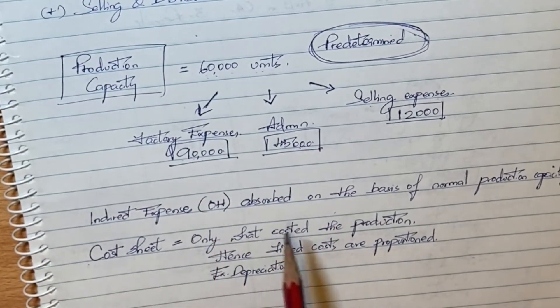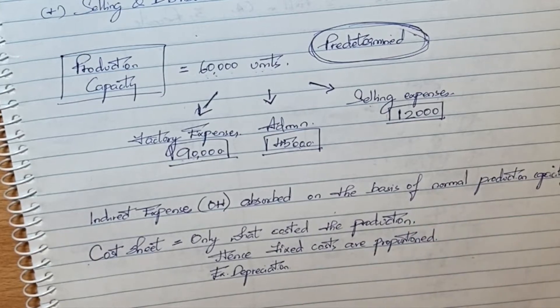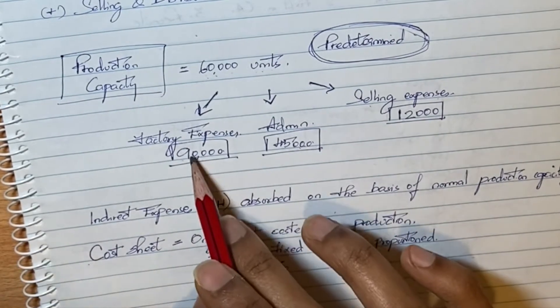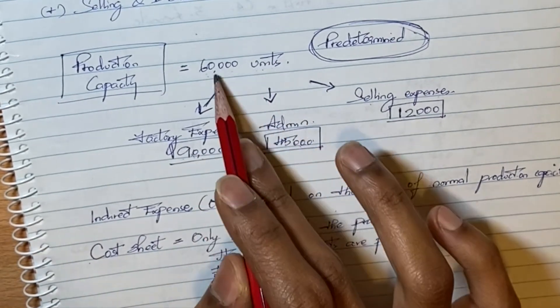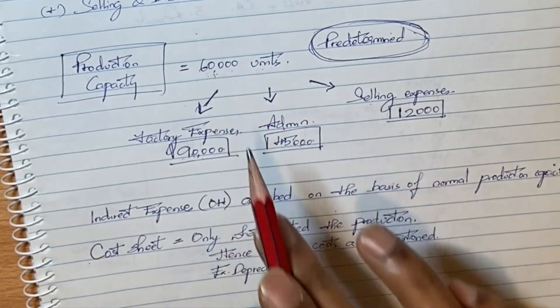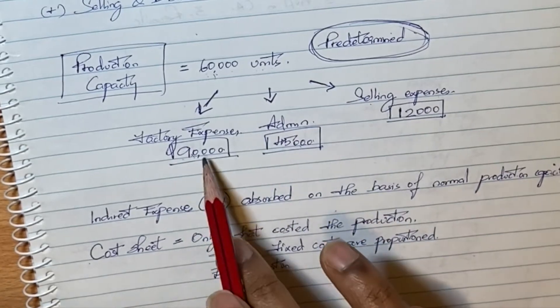Indirect expenses are absorbed on the basis of normal production capacity. Since actual production is 50,000 units and normal capacity is 60,000 units, we convert the fixed costs accordingly.